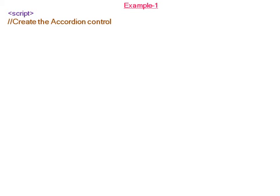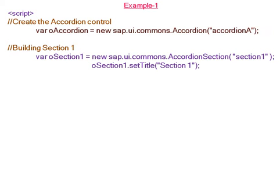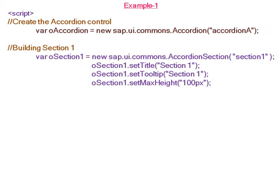In the application section, we first create the accordion control using the constructor for creating a new accordion. Inside the accordion we create sections. For section one, the constructor is new sap.ui.commons.AccordionSection, with title set to 'Section One', tooltip set to 'Section One', and maximum height set to 100 pixels.